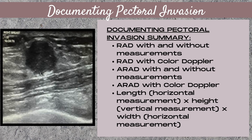Let's summarize. Here are the steps for documenting pectoral invasion. You want to take a radial image with and without measurements of the mass, and a radial image with color Doppler. An anti-radial image with and without measurements of the mass, and an anti-radial image with color Doppler. It doesn't matter what dimensions you measure your mass from, as long as you have all three dimensions — your length, which is a horizontal measurement; your height, which is a vertical measurement; and your width, which is a horizontal measurement.